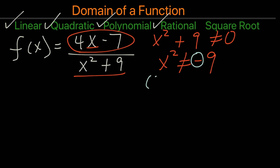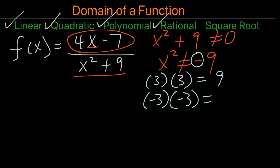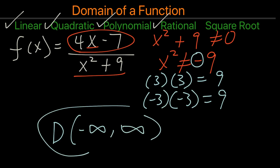We can verify this by placing positive 3 as x — we get positive 9. If we put negative 3, we still get positive 9. So therefore, the denominator will never be 0 in this case. Because of that, any number will work in this function, and we write the domain as negative infinity to infinity.